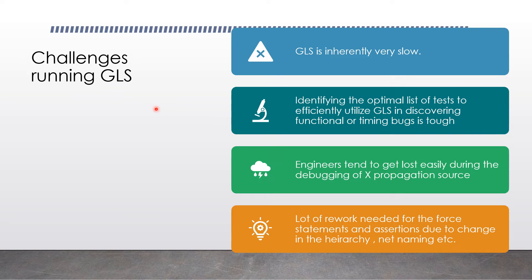Even though from the previous slide it seemed like a simpler flow, there are a lot of challenges in running a GLS simulation. Modern logic simulators are all event-based, meaning the simulator engine only updates the state of the design when an event occurs, such as a clock edge or an input toggle. In RTL simulation this is generally once per clock cycle and is relatively fast. In GLS, because of the greater complexity of each element, there are many more events to calculate. Even in zero or unit delay simulation it will take much longer than RTL simulation. When you add actual timing delays, the number of events grows exponentially, making GLS inherently very slow to run.